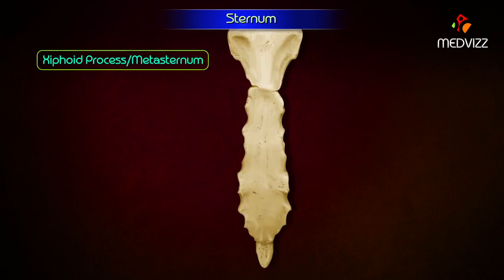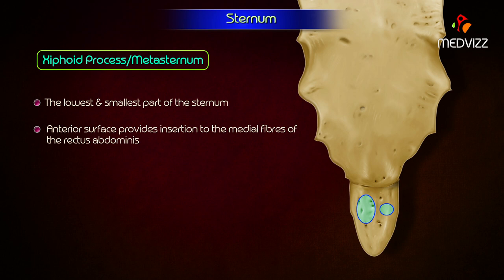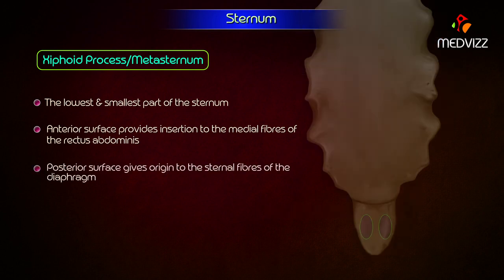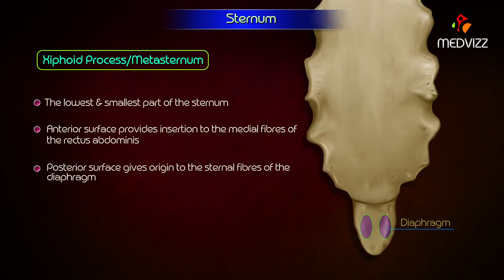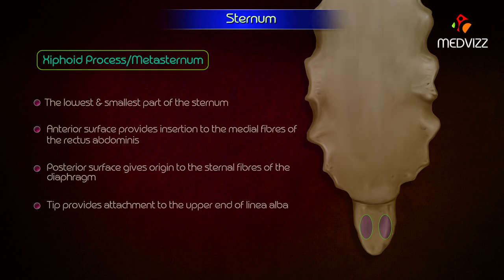Xiphoid process. It is the lowest and smallest part of the sternum. It varies greatly in size and shape, and may be bifid or perforated. Its anterior surface provides insertion to the medial fibers of the rectus abdominis. Its posterior surface gives origin to the sternal fibers of the diaphragm. Its tip provides attachment to the upper end of the linea alba.